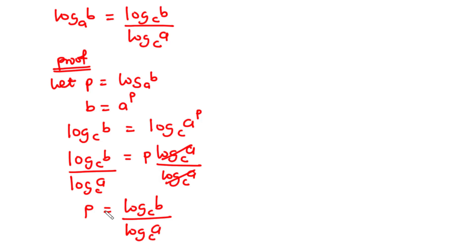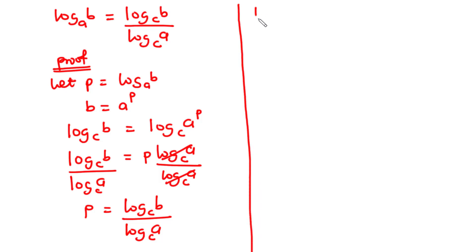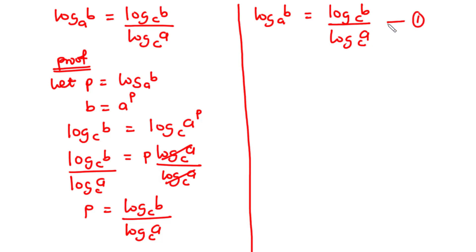Initially we said that P is equal to log B base A. Therefore, we substitute log B base A in place of P. So we say that log B base A is equal to log B base C divided by log A base C. This is the same equation we stated earlier — let's call this equation 1. C is the new base, or the base you want to change to, so you are changing from base A to base C.